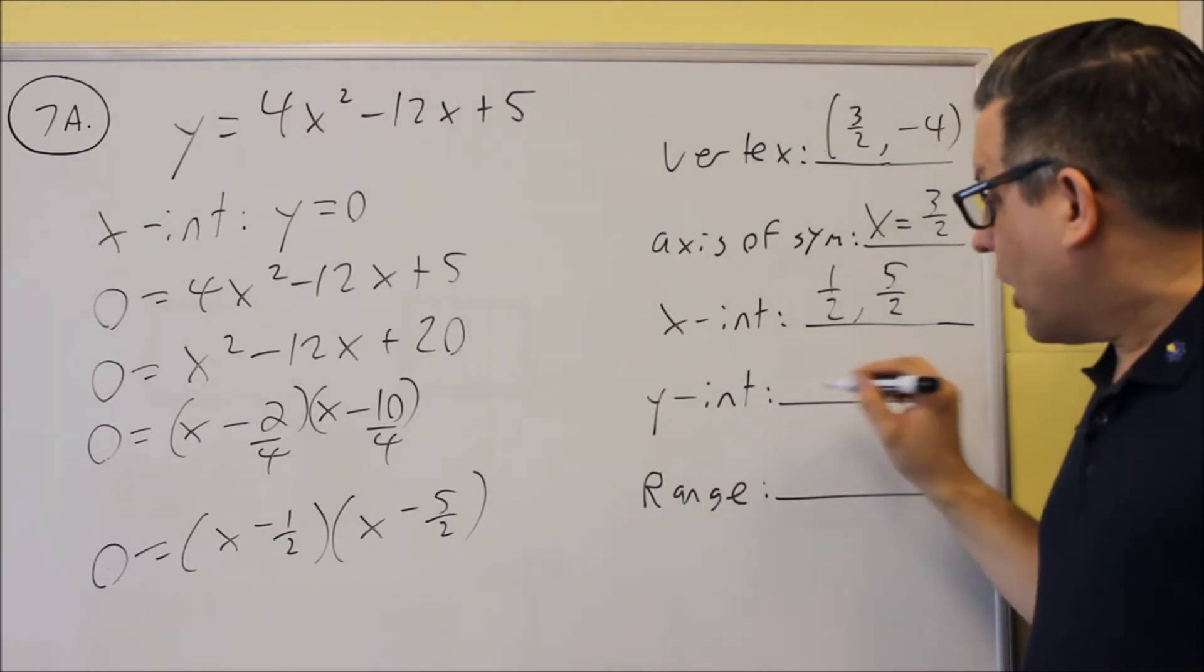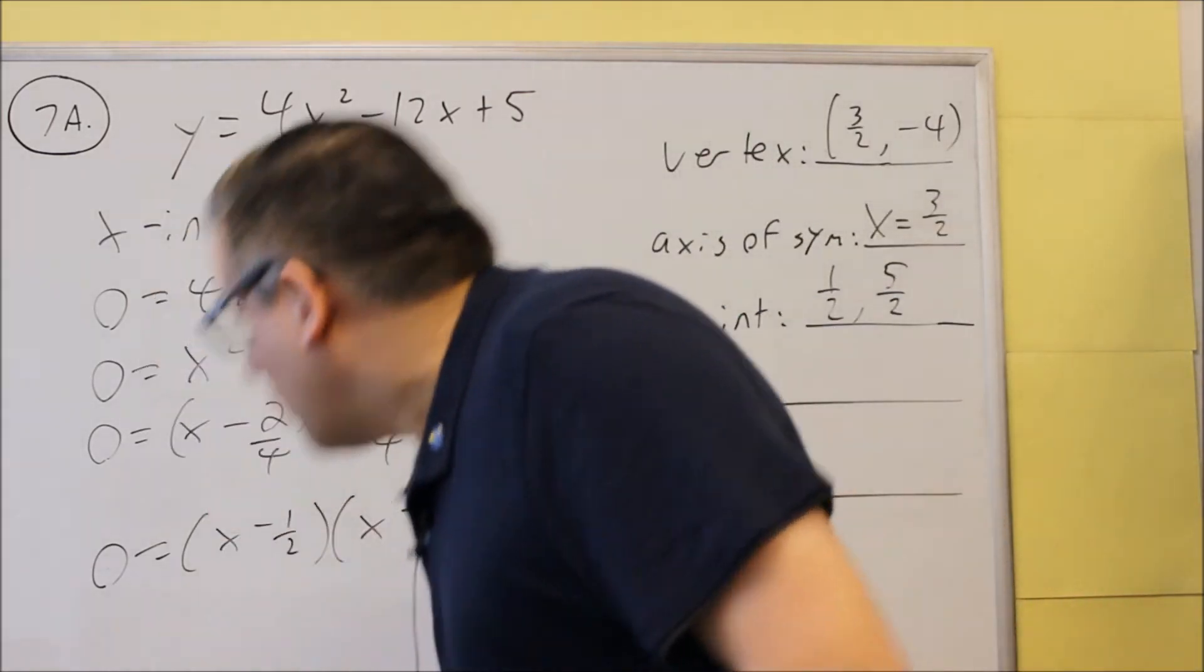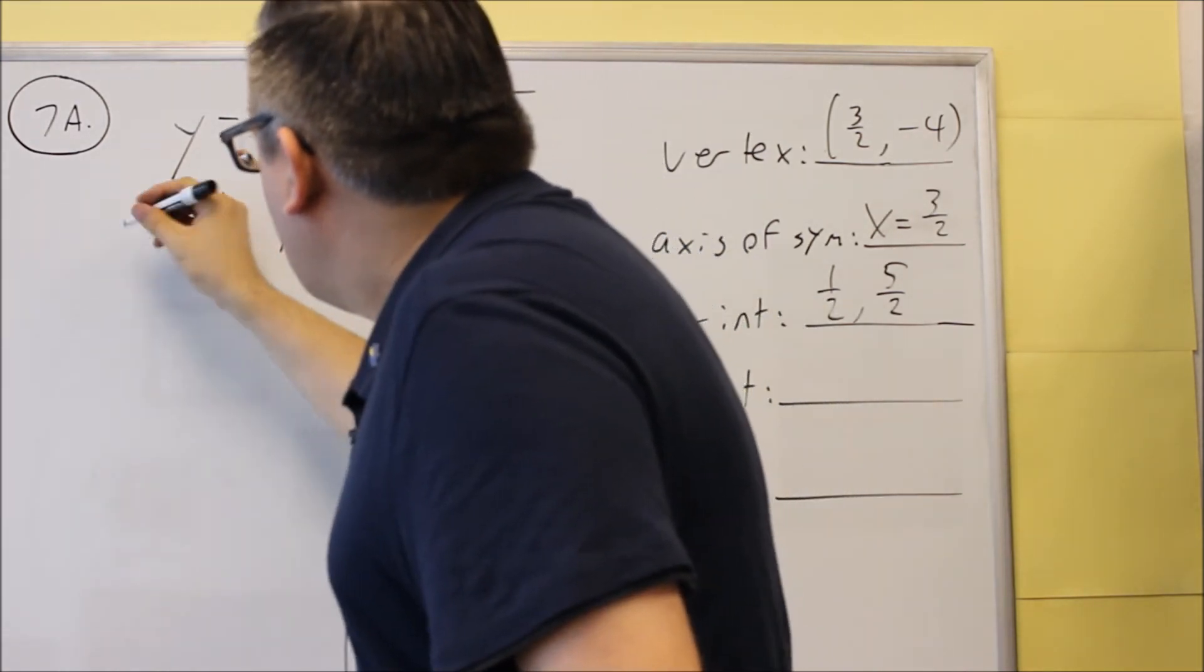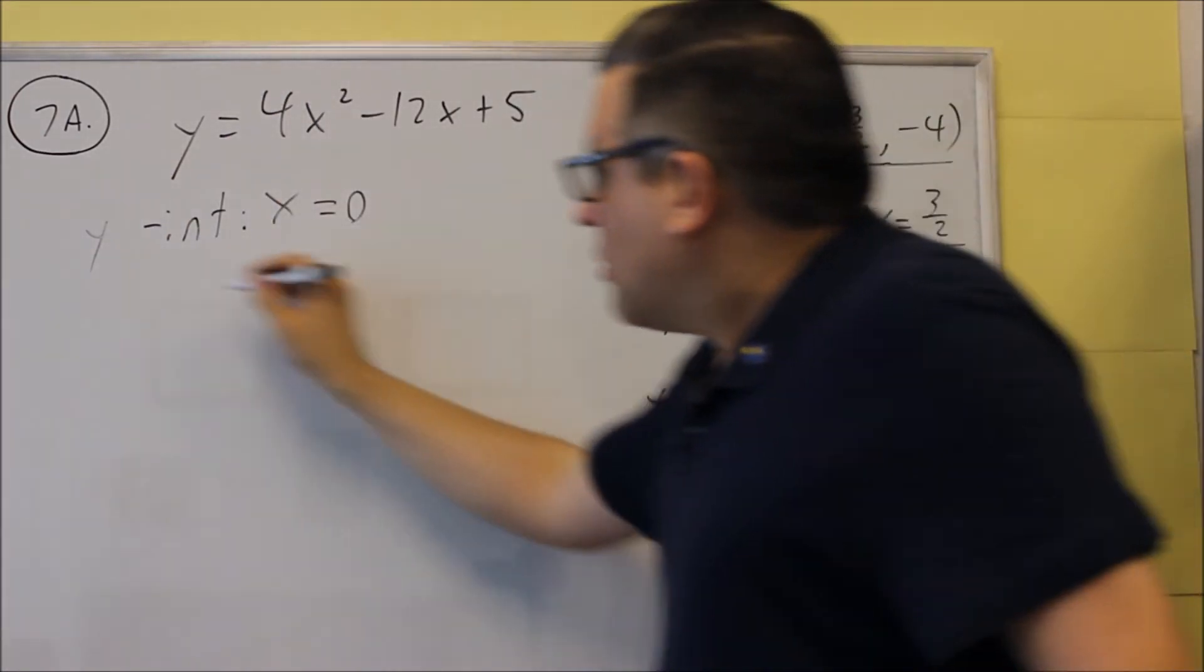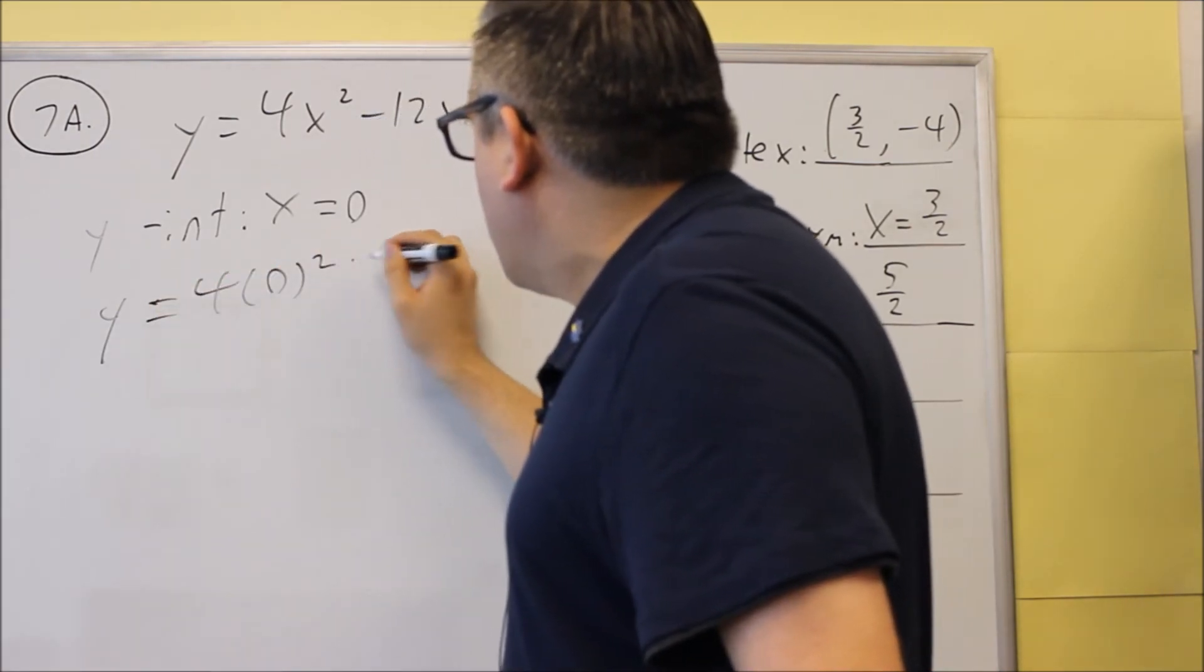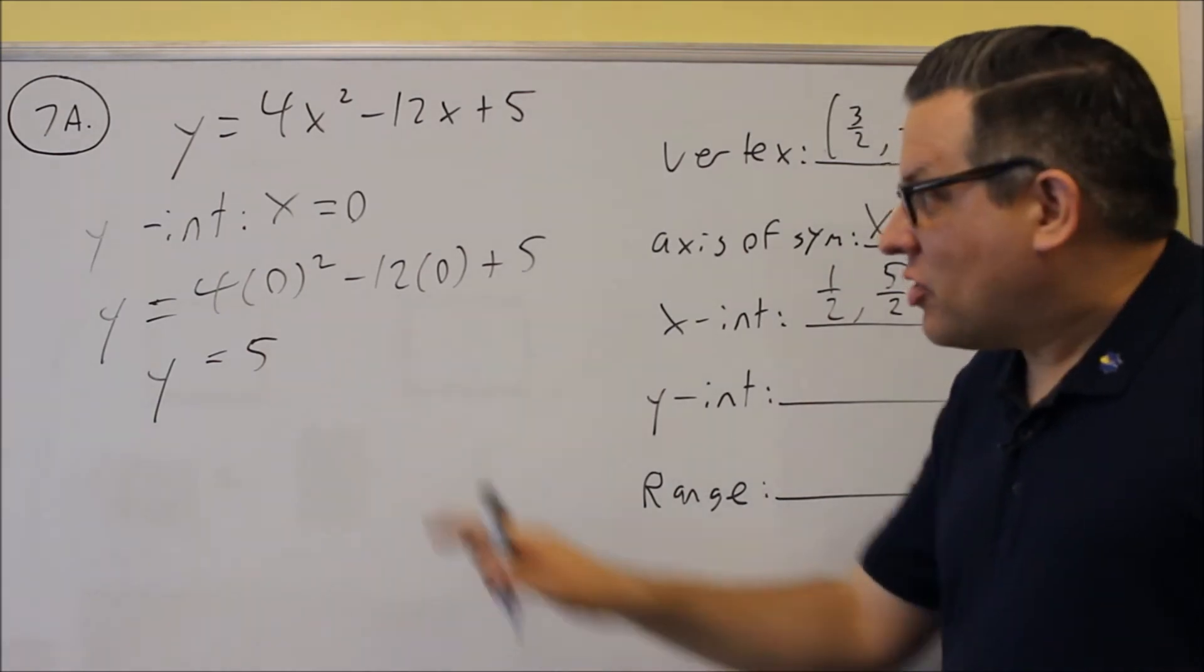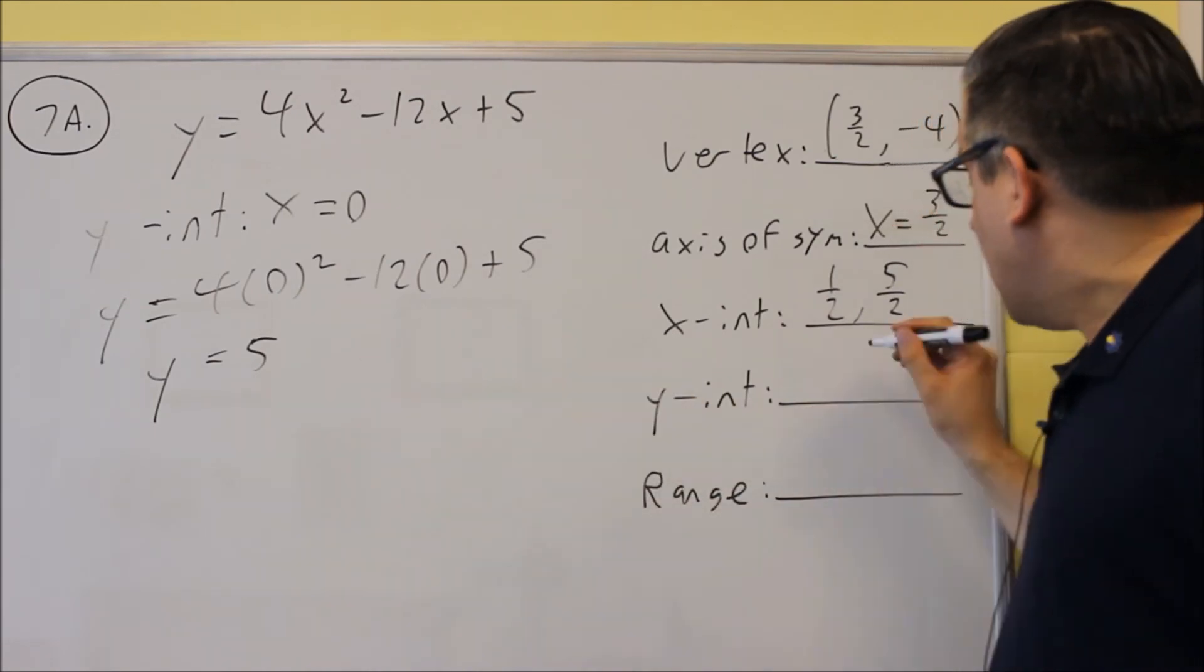Okay, so then we've got to find the y-intercept. Okay, now the y-intercept, show that one up here as well. So for that, so if we do a y-intercept, the difference here is now we put in a 0 for x. So if I put a 0 in for x, I get 4 times 0 squared minus 12 times 0 plus 5, I'll get y equals 5 as a result. So that's how you always find y-intercept, you always put a 0 in for x. So 5, that's going to go here.